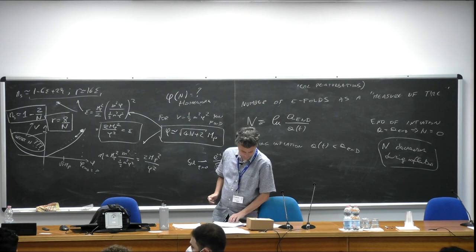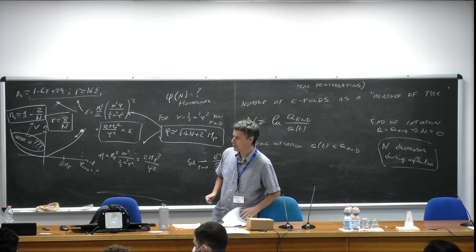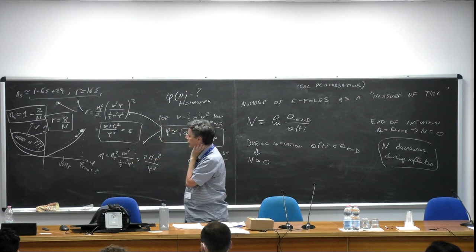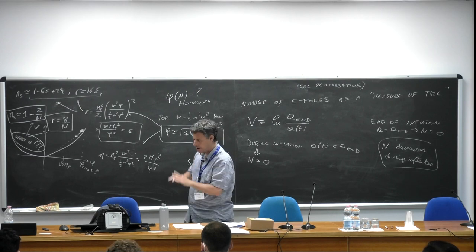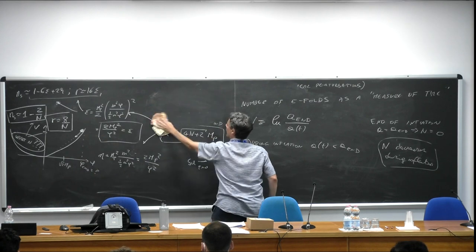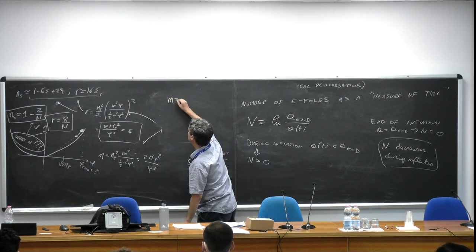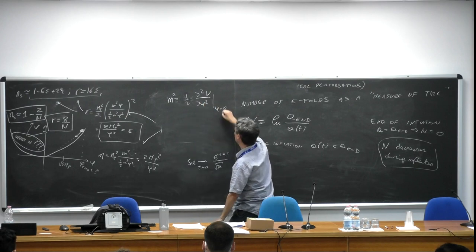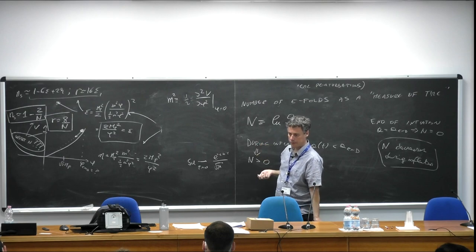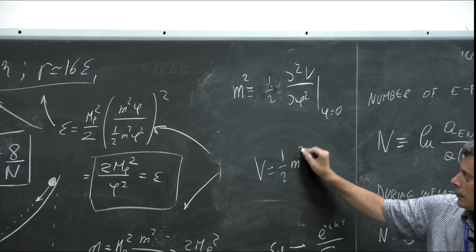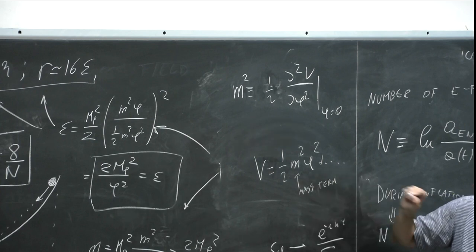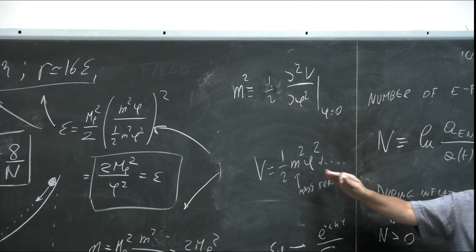Question from Zoom about little m: little m is just a parameter — the mass of the inflaton field. For a generic potential, the mass is defined by m² = (1/2) V''(0) evaluated at the minimum. If the potential is just the quadratic term, that's V = (1/2)m²φ². For this model, if you look at the normalization of the perturbations, m is of the order of 10¹³ GeV. But for our discussion m is just a constant parameter.